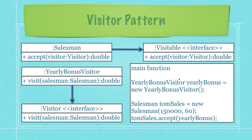Over in main, all we're going to need to do is create our object that calculates the yearly bonus, create our salesperson and provide their numbers, and then whenever accept is called — which is inside the sales class — it is going to be passed the guy that calculates the yearly bonus, and then it calculates it. That's it.